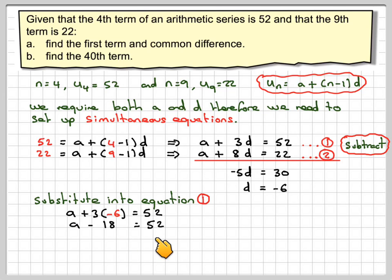a - 18 = 52. Adding 18 to both sides, we're going to have a = 70.